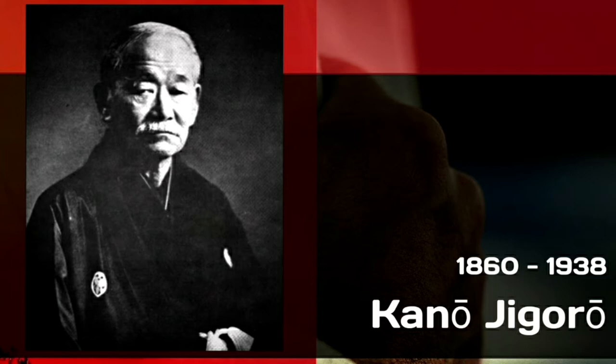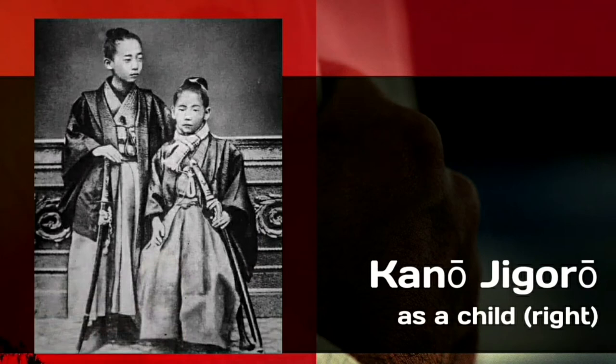Jigoro Kano lived from 1860 to 1938 and was born Shinosuke Jigoro. As a child, Jigoro Kano had an academic upbringing, and from the age of seven he studied English, Shodo (Japanese calligraphy), and the four Confucius texts with the help of a few tutors.